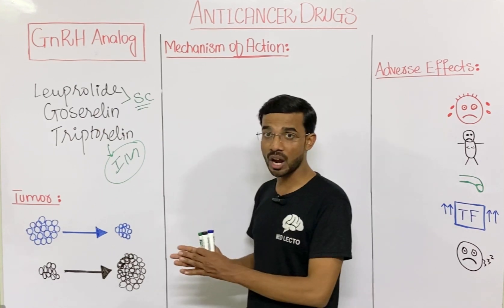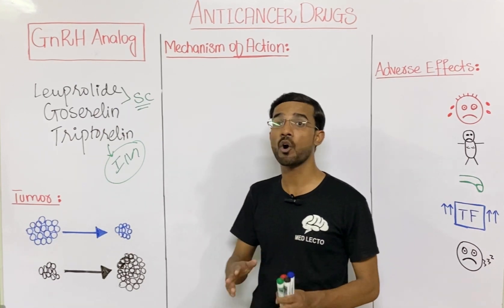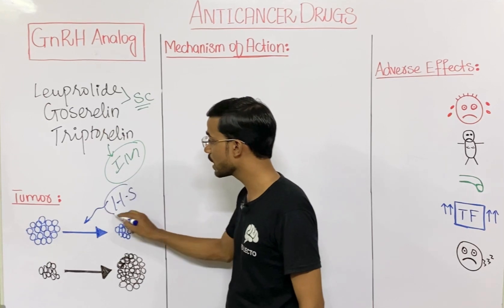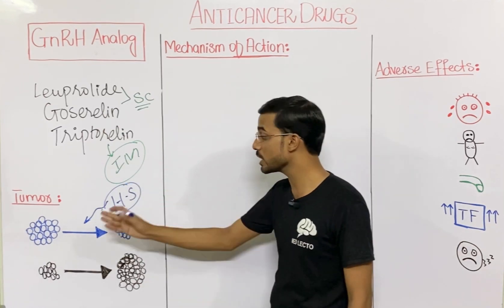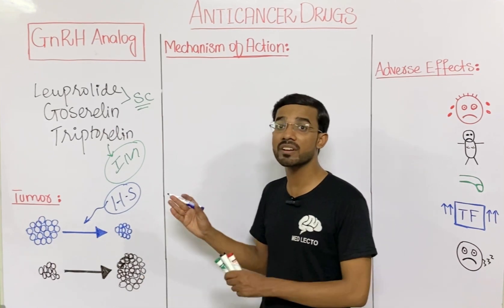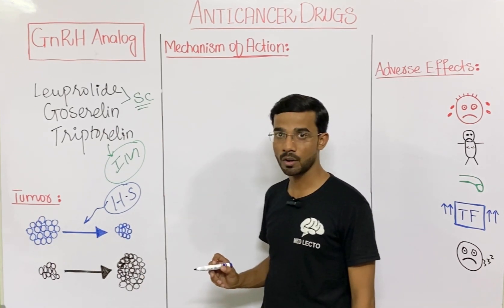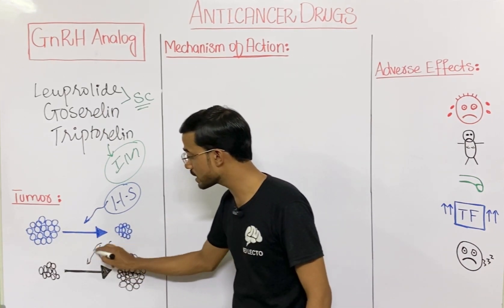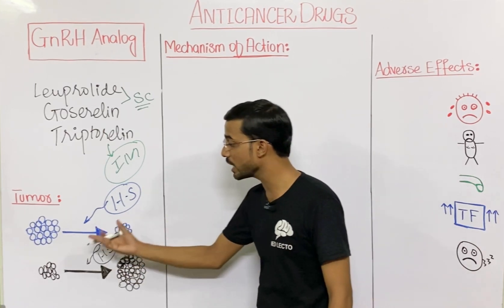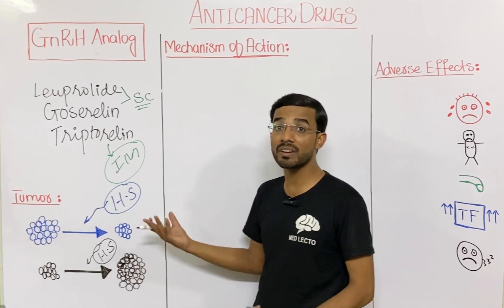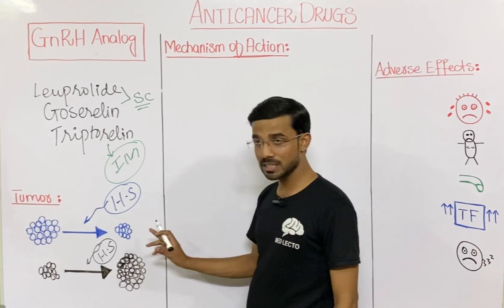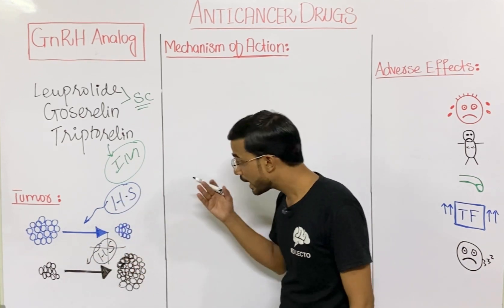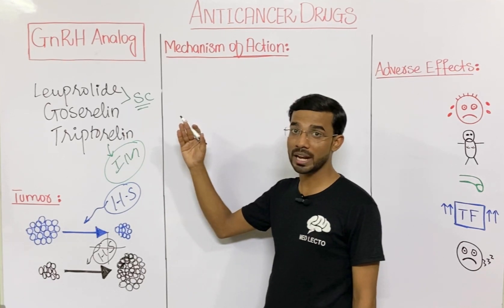Before we start, we will revise the types of tumors that are hormone mediated. There are some tumors that, when they receive a hormonal stimulus, start regressing in the presence of that hormone. On the other hand, there are some tumors that start progressing with hormonal stimulus. So if we stop the hormonal stimulus, these tumors can be cured — and this is the category where gonadotropin releasing hormone analogs apply.